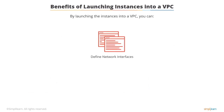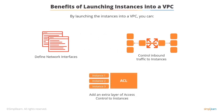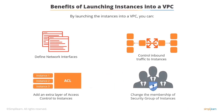You can define network interfaces and associate one or more interfaces into your instances, control the inbound traffic to instances — known as ingress filtering — and control the outbound traffic from instances — known as egress filtering. You can also add an extra layer of access control to instances in the form of ACLs, and change the membership of a security group of instances while they are running.